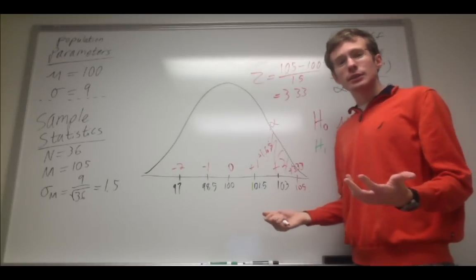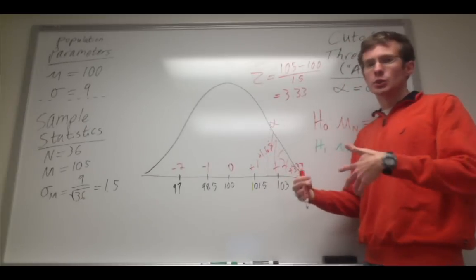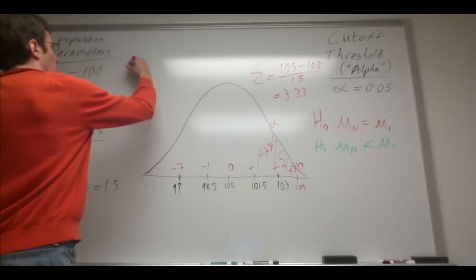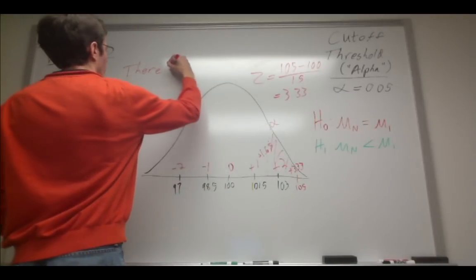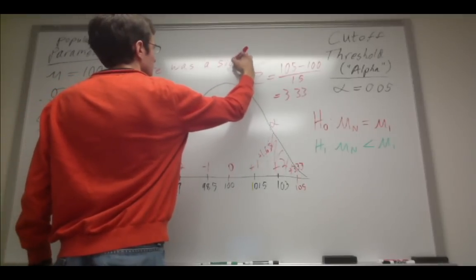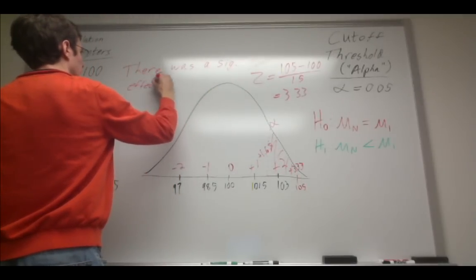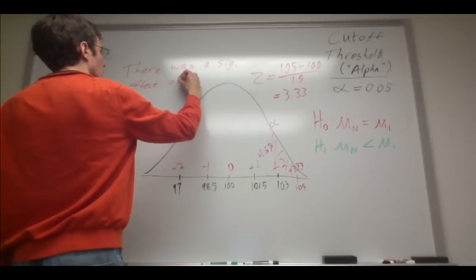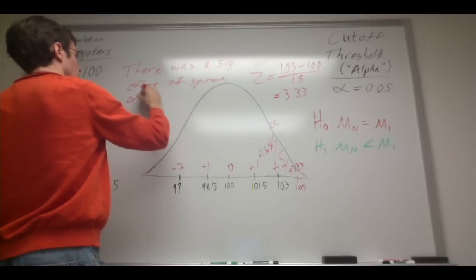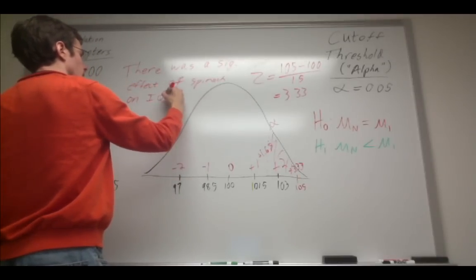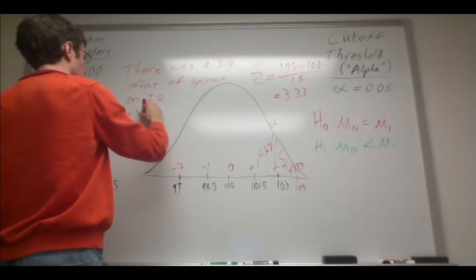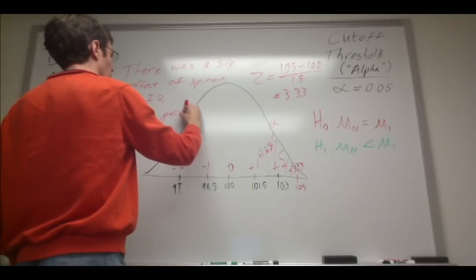Last thing to do is to actually write this in a format that can be communicated to anybody else. And I'm going to say that there was a significant effect of spinach on IQ. z equals 3.33. p is less than 0.05.